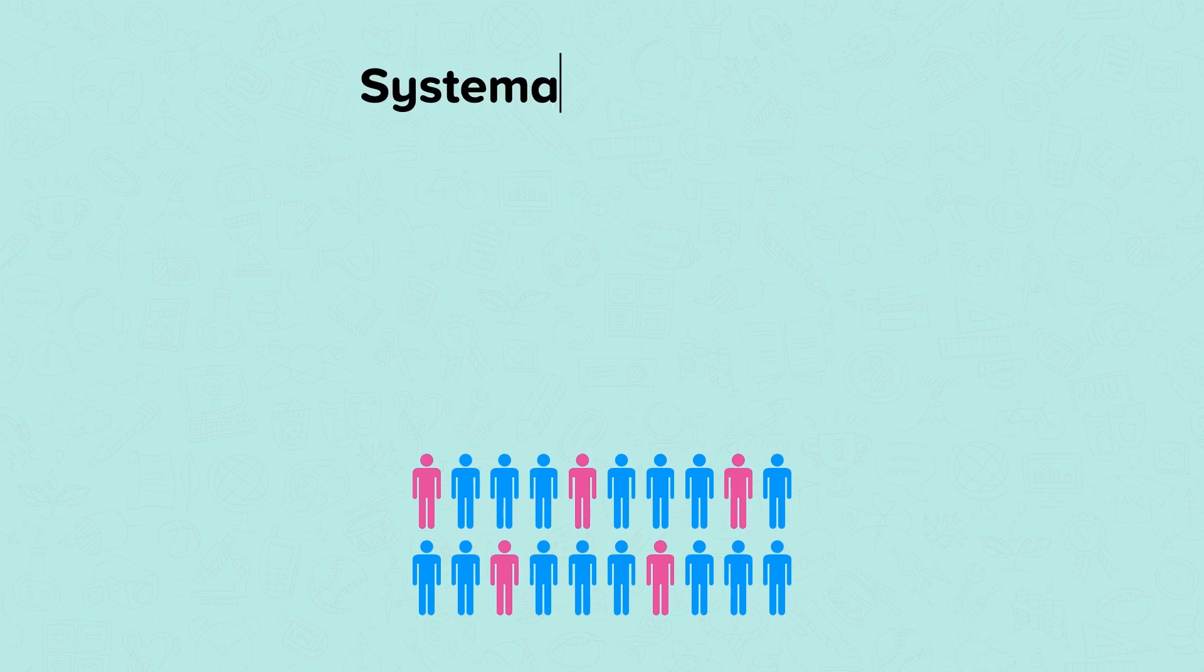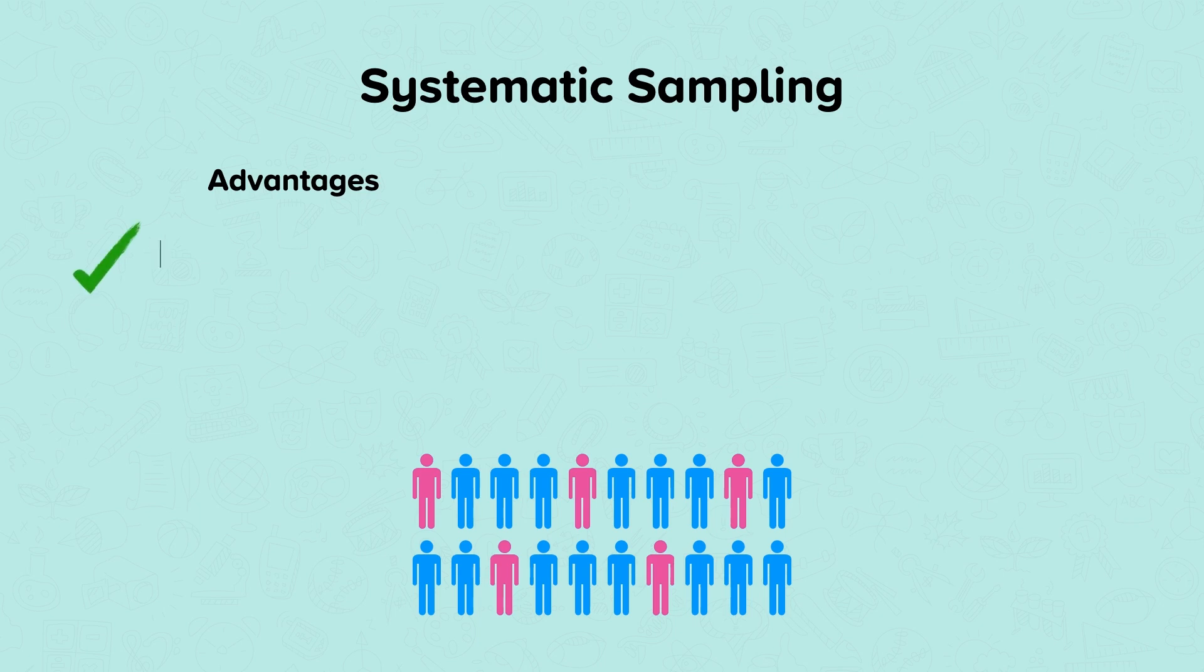Advantages of systematic sampling are that it is more straightforward than random sampling. A grid doesn't necessarily have to be used. Sampling just has to be at uniform levels. A good coverage of the study area can be more easily achieved than using random sampling.